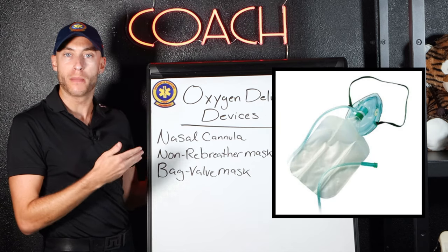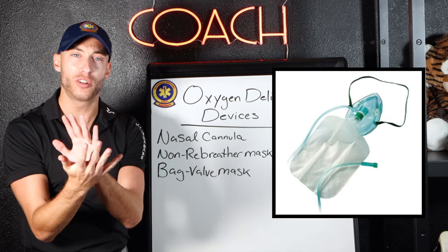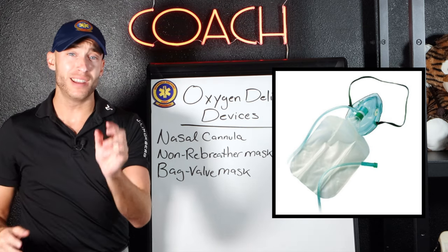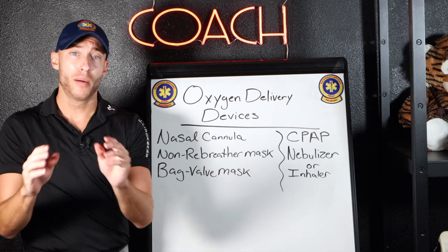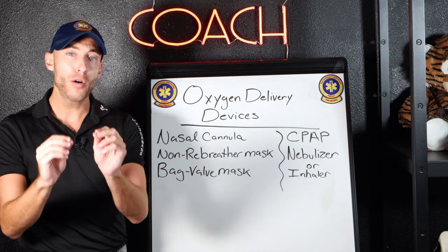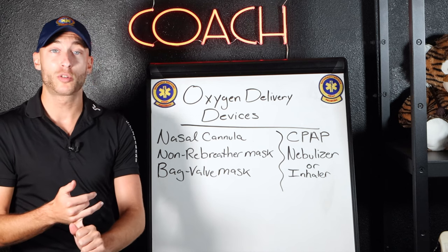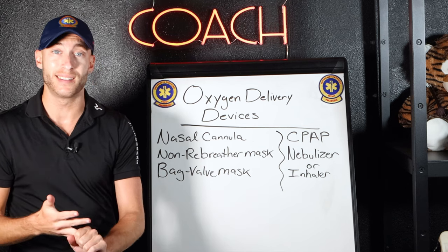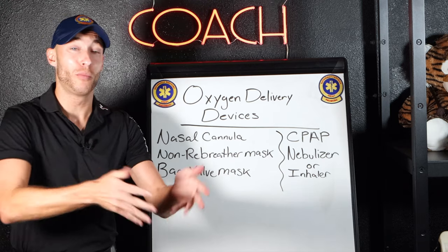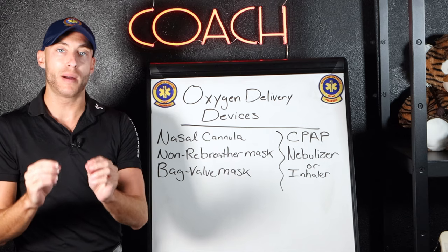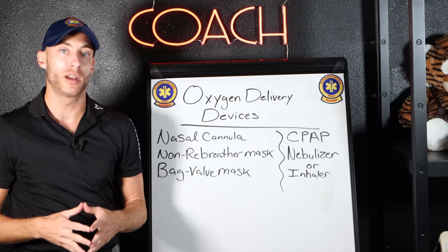Next, we have the non-rebreather mask. Think of a worsening patient — maybe the patient is able to maintain their own airway and not having a ventilation problem, but their O2 sat is a little lower. We use the non-rebreather for oxygen delivery. Let's say the patient is tripoding, speaking in one or two word sentences, and their O2 sat is maybe a lot less than 93%. That's where we bring out our non-rebreather mask with high flow to get them back above 94% oxygen saturation.